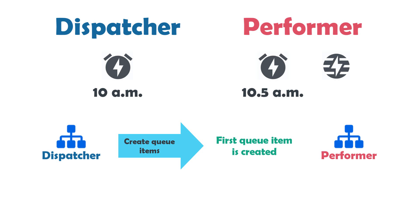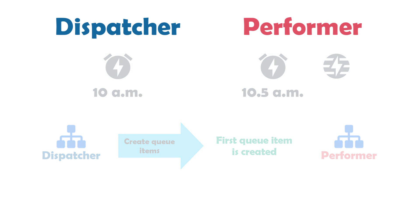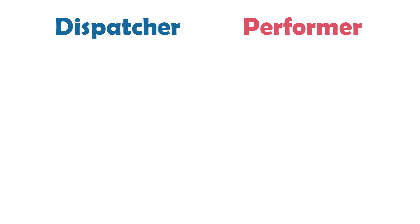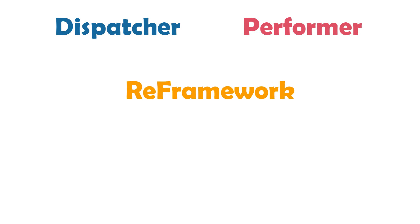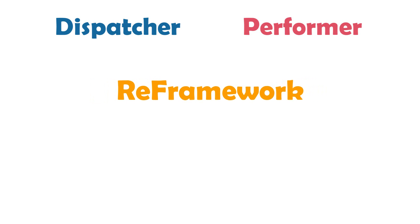So we have both processes scheduled in Orchestrator. That was all about dispatcher and performer processes. I hope you could better understand the model now. In this video I only explained the dispatcher-performer model, but the REFramework is another topic that I will address in another video.